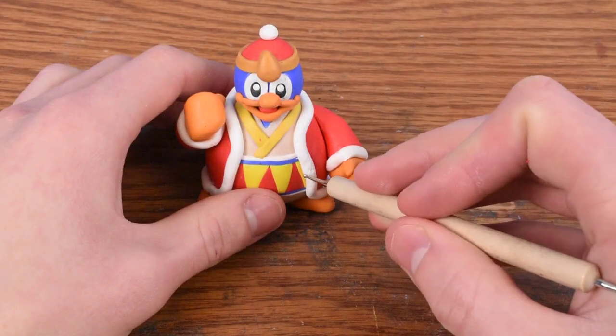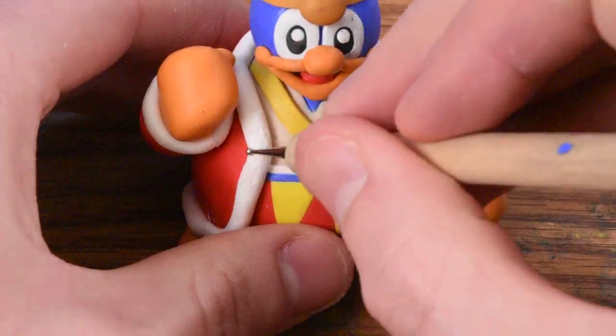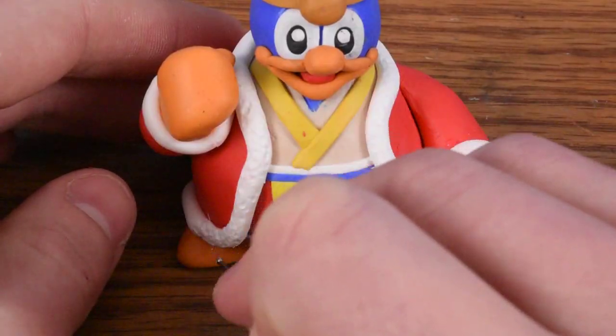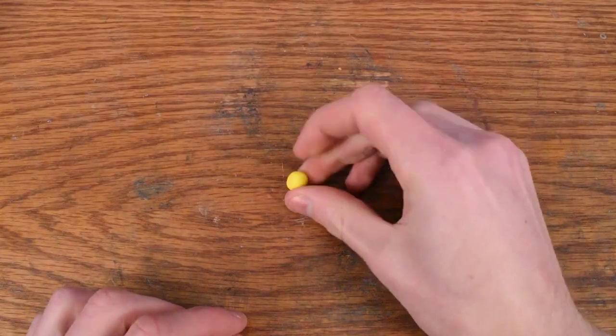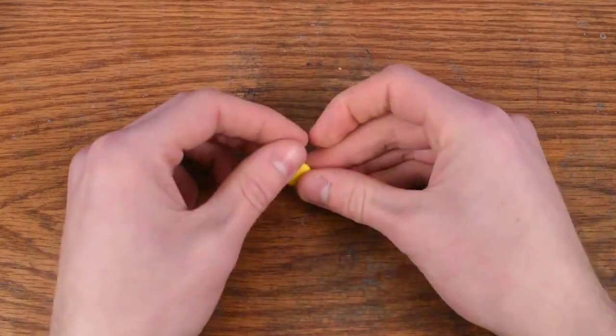So let's take this really thick worm of white clay and wrap it around the whole edges of the robe. And now we can take our dotting tool and start adding all of this texture into it. I think this is a really nice touch and it really gives it more of a fur look rather than just the flat white.